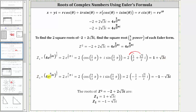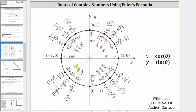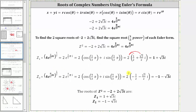Similarly, for z sub two, when we multiply the exponent on e by one-half, we get four-thirds pi radians. Converting to polar form, we find the exact trig function values for cosine and sine of four-thirds pi radians using the unit circle or reference triangles. At four-thirds pi radians, the cosine value is negative one-half and the sine value is negative square root three divided by two. Distributing two, we get the second root: negative one minus square root three i.